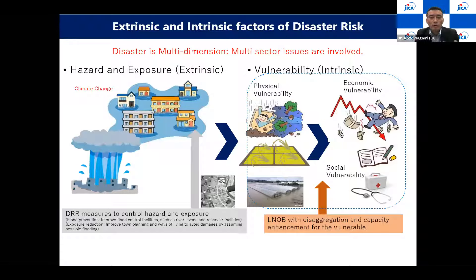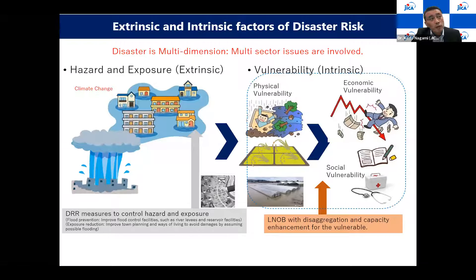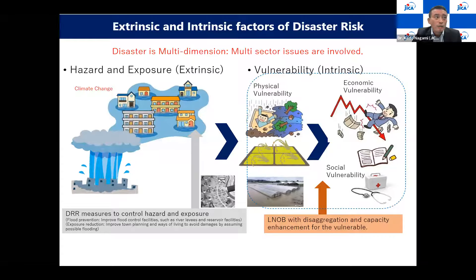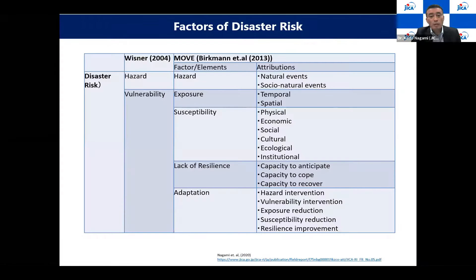These elements reflect and affect each other, ultimately leading to damage and losses in a spiral effect. These are the attributions of risk factors according to Birkmann, as most of us already know.